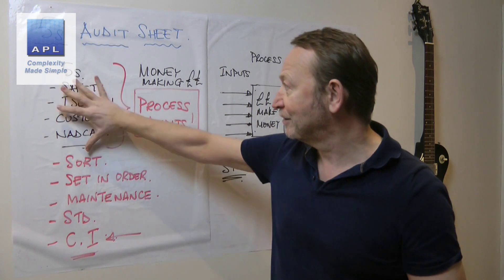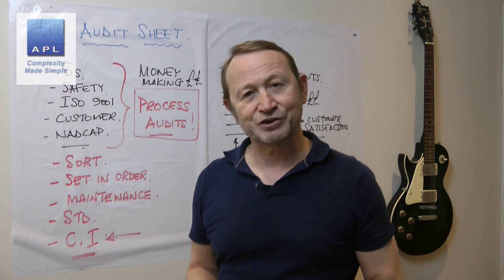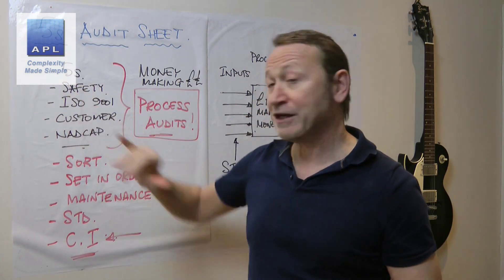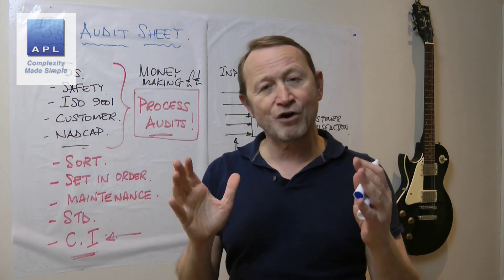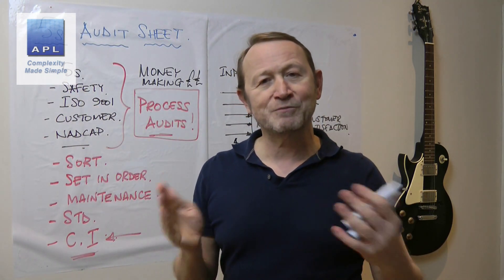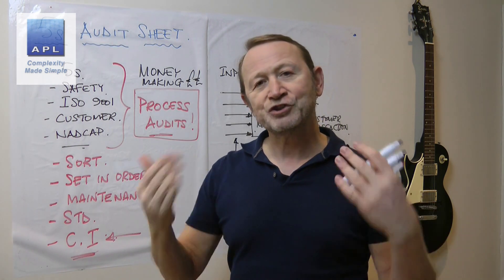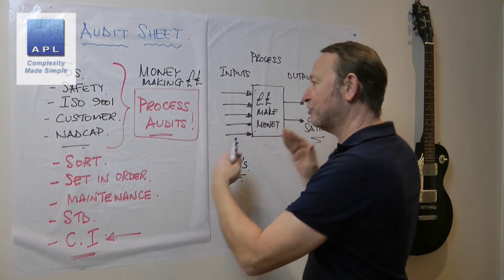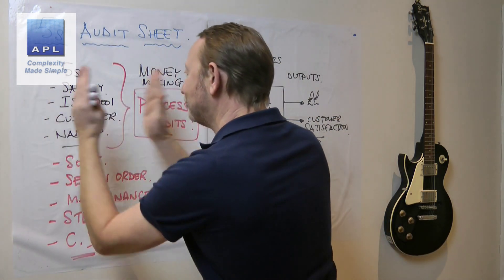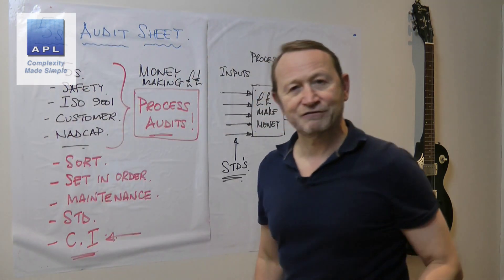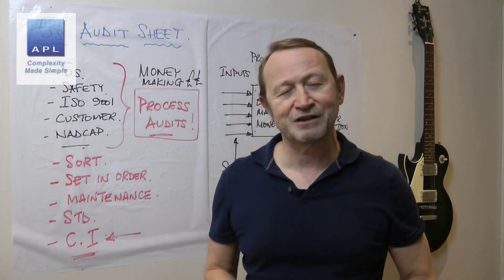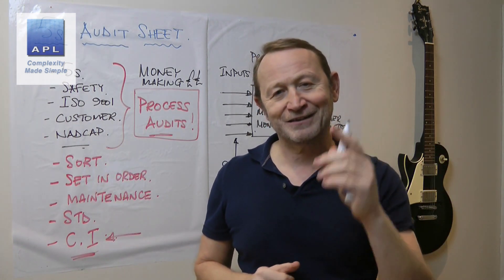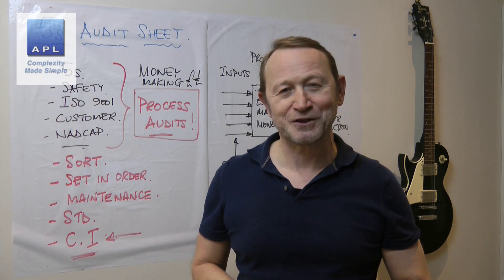The audit should be unique to you. They should be process audits — money-making process audits — and they should work in every situation. NADCAP, ISO, 5S — what are they all trying to make you do? They're trying to make you world class. We just never understood that. Make money first, put the audits in place, and then satisfy the certification bodies later. That's the greatest way to make cash. That is how to do a process audit.